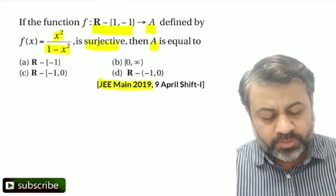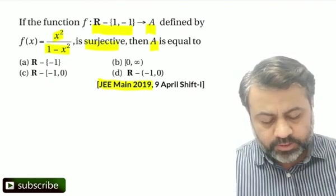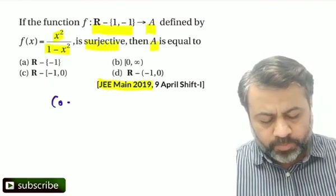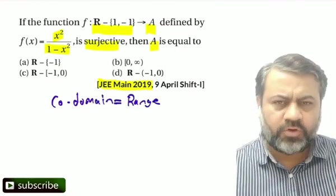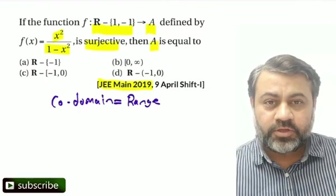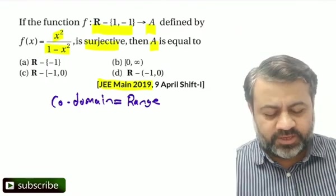The first thing is what do you mean by the function is surjective? It means co-domain is equal to range. If the function is surjective or onto, co-domain is equal to range. That means we have to find the range here, which is A.